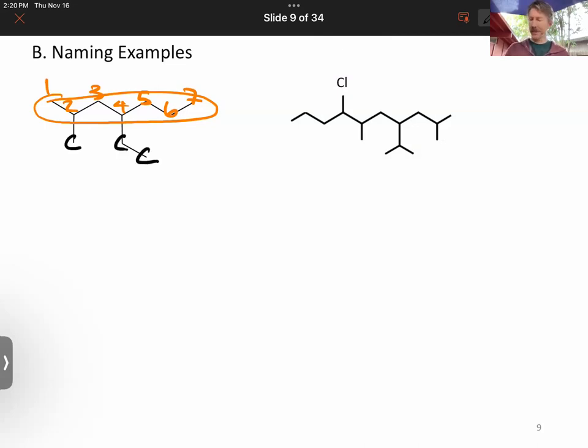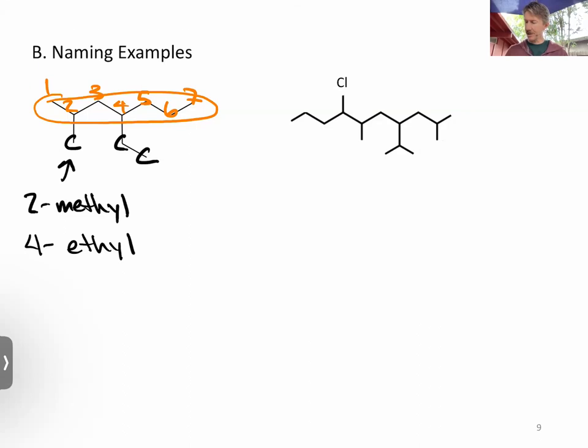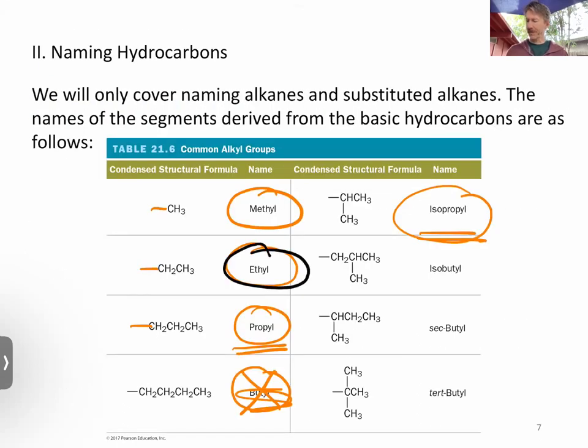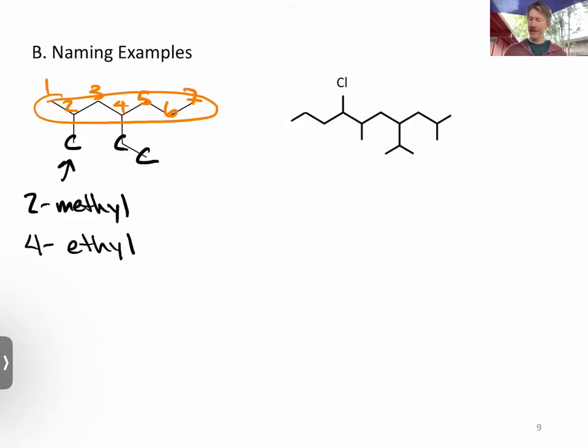One carbon is a methyl group, and I'm going to call it a two methyl because it's on the second carbon. We also have a four ethyl because it's two carbons, and two carbons is an ethyl group. That's what those names came from. So this is going to be 2-methyl, 4-ethyl, heptane. With seven carbons, that's hept. And it's A-N-E because they're all single bonds. Those are the only things we're going to be naming are alkanes.